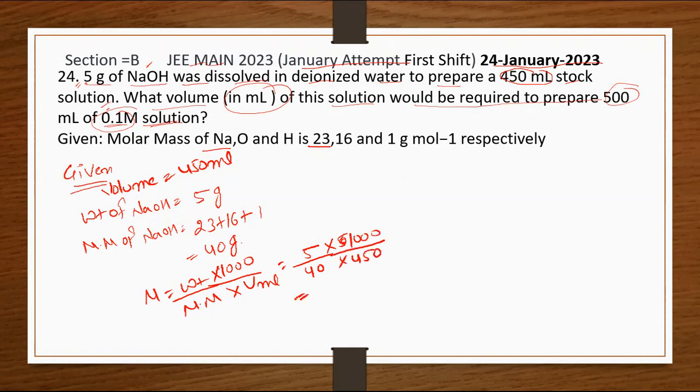When we calculate this, the value we get is 0.278 molar. So the initial molarity, that is M1, is 0.278. We need to find what volume to take.